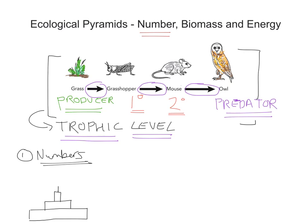Each block represents a different trophic level. The one at the bottom represents the producer — in this case, the grass. It's always good practice to label each of the bars: grasshopper is next, then mice, and then owl at the top. You'll notice each of the bars has the same height — and that's really important. The height of each bar should be the same, but in terms of width they should be proportional.